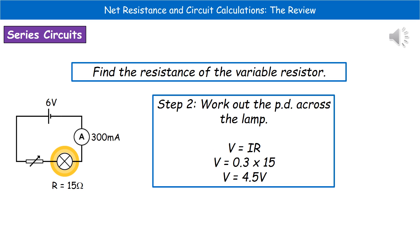The second step is to work out the potential difference across the lamp, which gives us the extra information needed to find the variable resistor's resistance — we can't do that yet because we don't have enough information. Using V = IR, the potential difference across the lamp is 0.3 amps times 15 ohms, which gives us 4.5 volts.